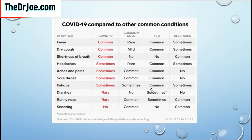These two columns — flu and COVID-19 — concern us most. Headaches, aches and pains, sore throat, and fatigue are more common with flu compared to COVID-19, where you see them only sometimes. But shortness of breath is more common with COVID-19 and you don't see it much with flu. So this infographic really does help.